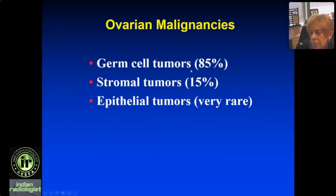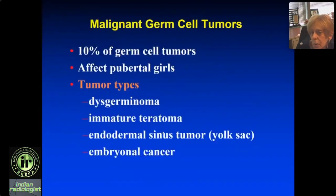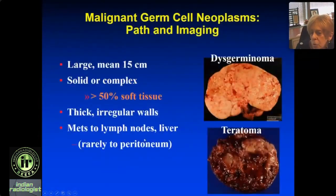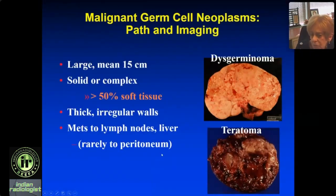For malignancies, germ cell tumors are by far the number one diagnosis, then stromal tumors, and then epithelial tumors — very rare. Malignant germ cell tumors: as I said, most teratomas are benign, a few will be malignant. Benign lesions are cystic; solid tumors are malignant. The tissue types include dysgerminoma, immature teratoma, endodermal sinus tumor, and embryonal cancer. We really can't separate these — that's a histologic diagnosis. Malignant tumors are huge, solid, or complex, with predominantly soft tissue. They metastasize to local and distant lymph nodes and liver, but not to the peritoneum or mesentery.